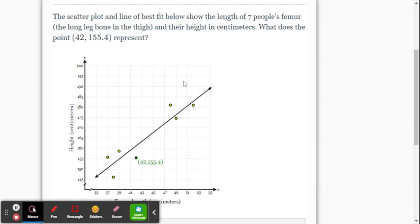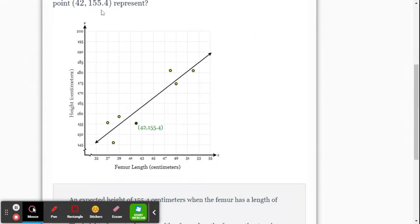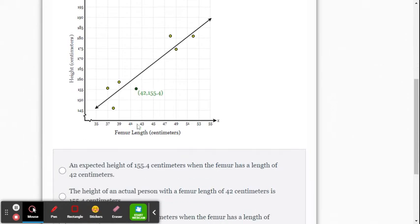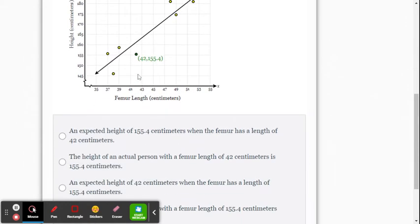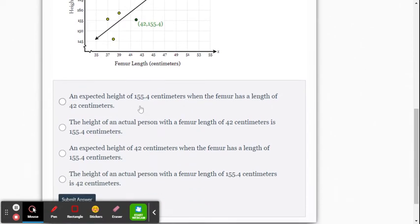It gives us a scatter plot. This time, it's looking at the length of people's femur bone and their height in centimeters. What does the point (42, 155.4) represent? So that point is not on the line. So this is actual data from somebody. So this is a person. So the height of an actual person with a femur length of 42 centimeters and a height of 155.4. This is the one we want.